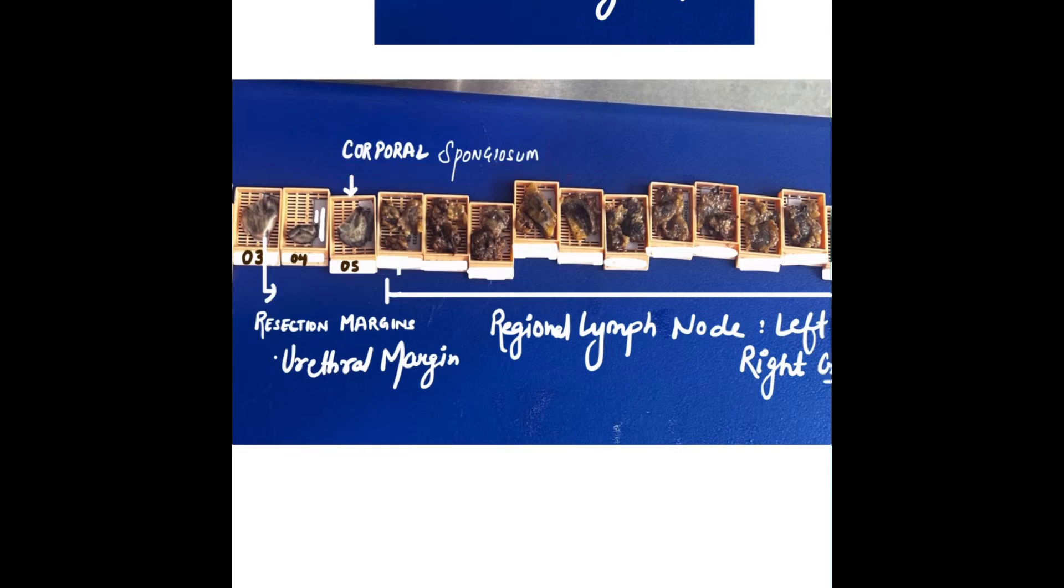Here I have written it as corpus spongiosum, because this is the corporeal margin, and this is the urethral margin. In any case of carcinoma, the surgeons will give us regional lymph nodes.